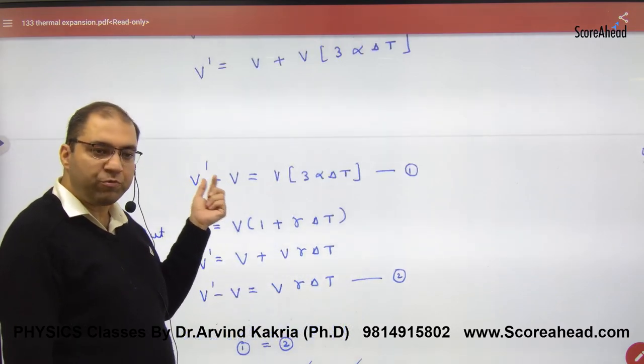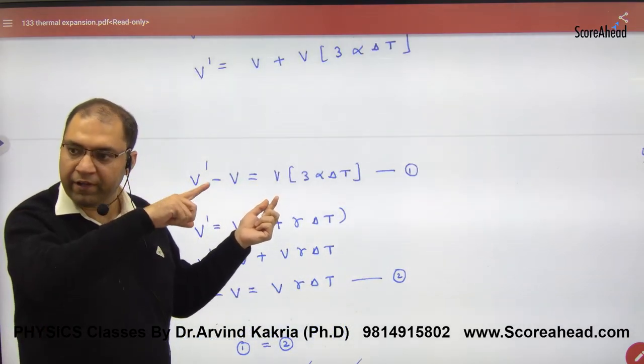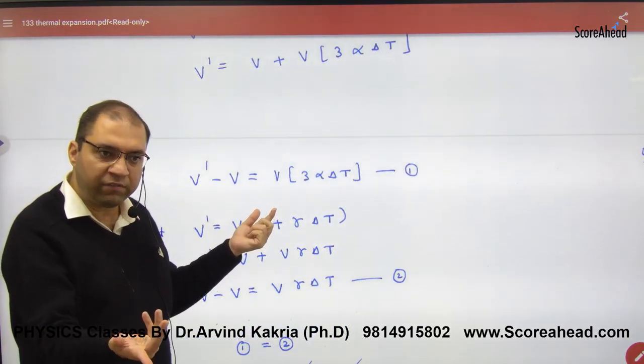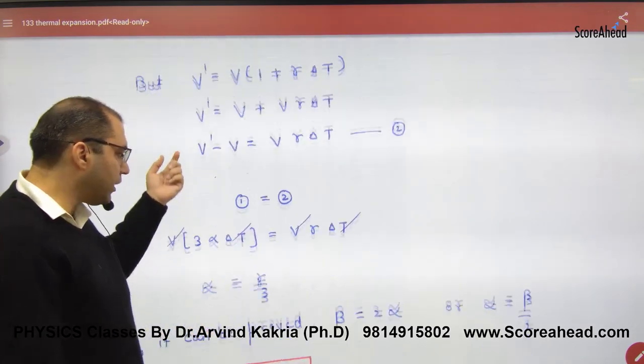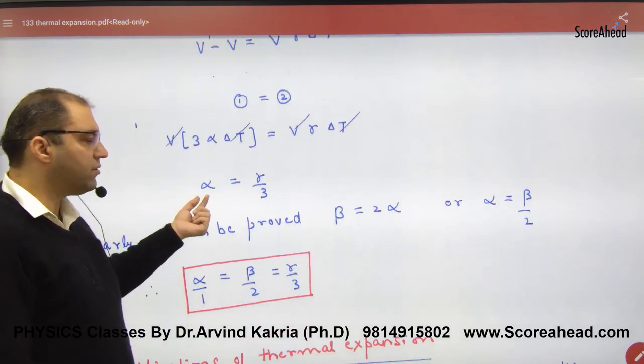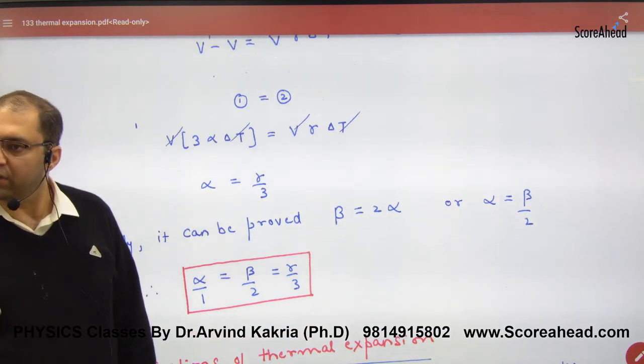And once you have removed V dash minus V in terms of alpha. So V dash minus V, equate both. V delta T cancel. So what is the answer? Alpha is equal to gamma by 3.